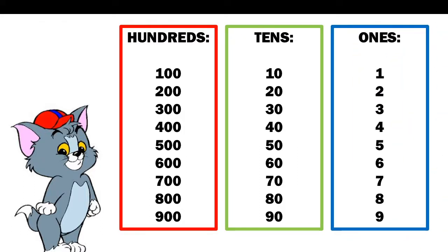And these are ones. Ones are simple: one, two, three, four, five, six, seven, eight, nine. These are hundreds, tens, and ones.